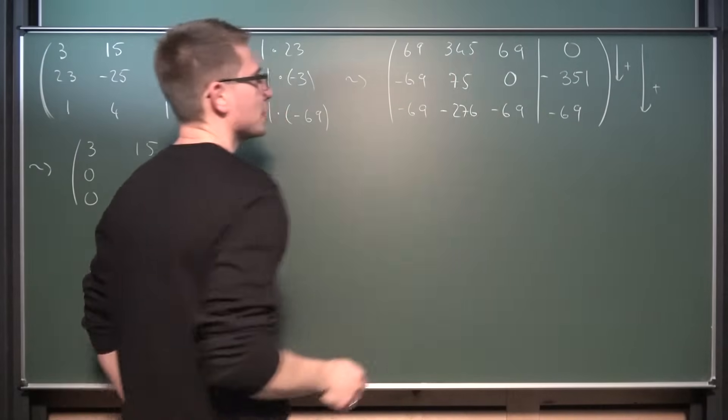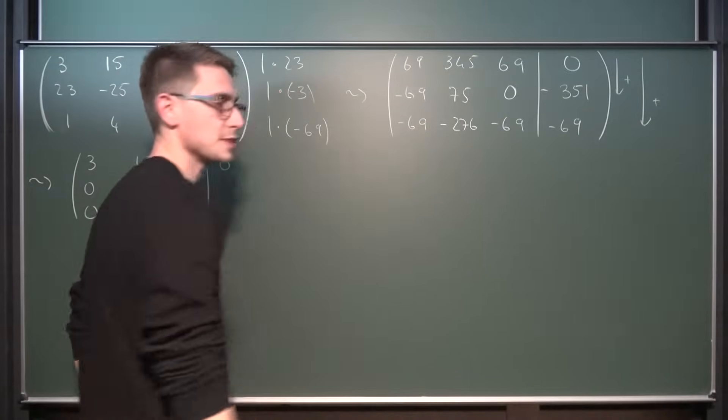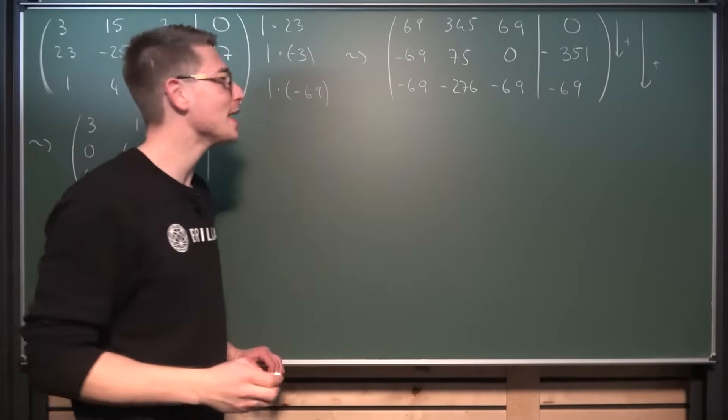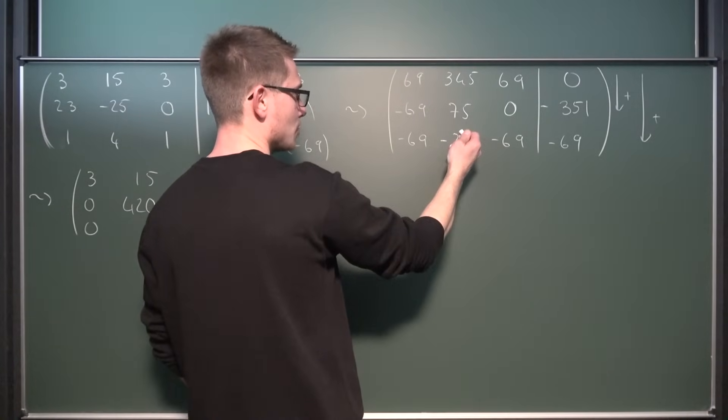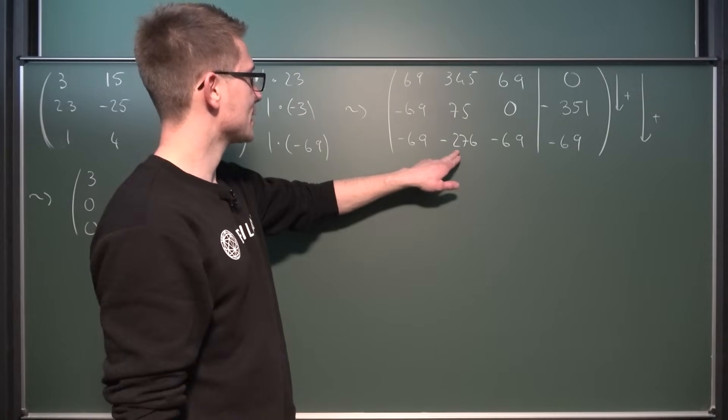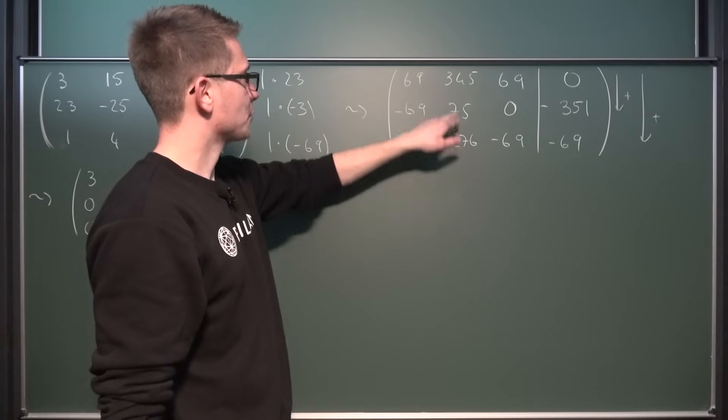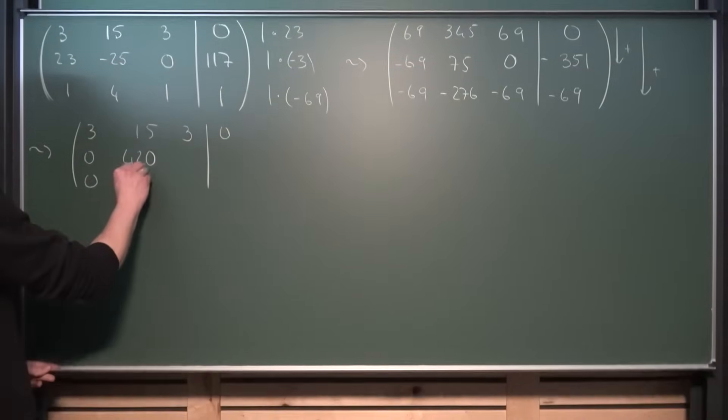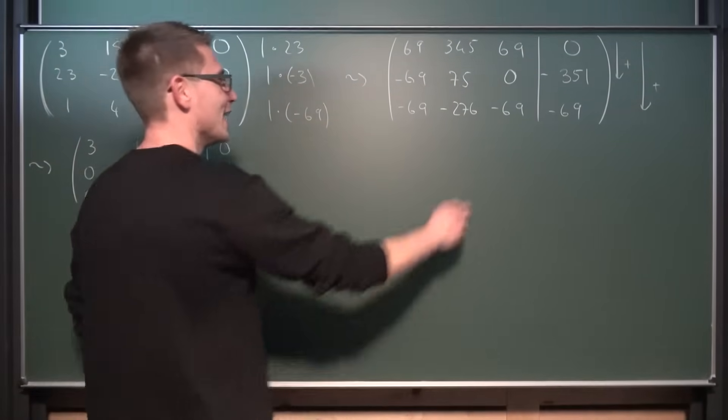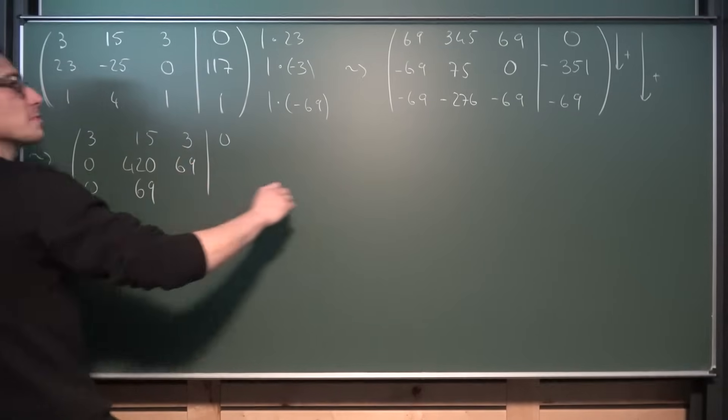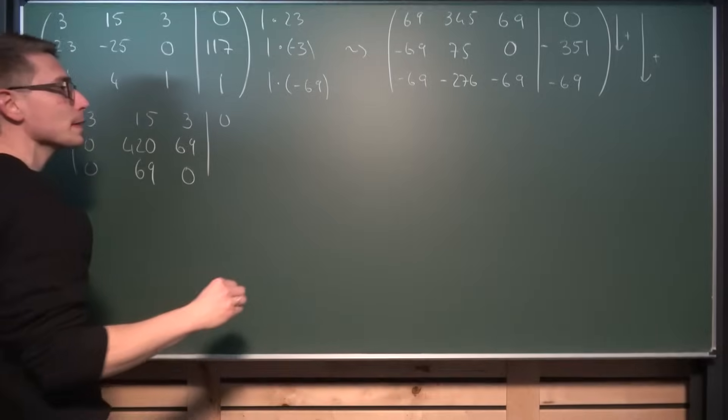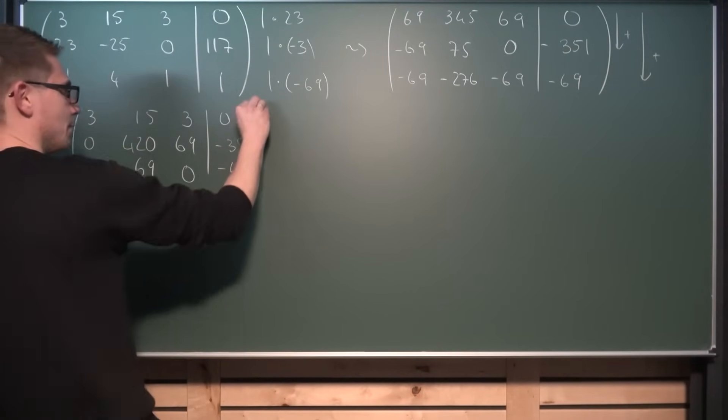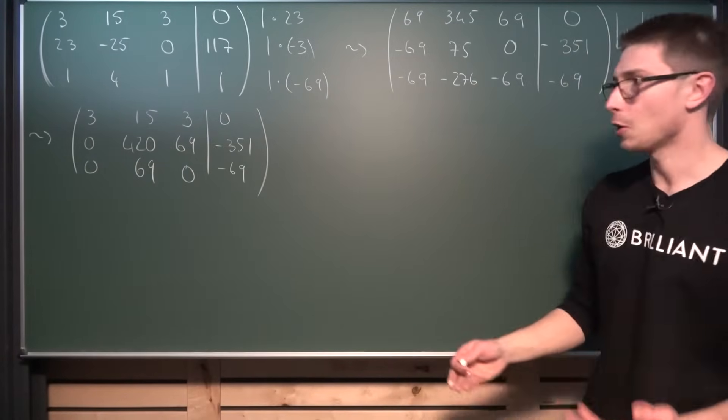So we get 0 and 0 here. Then we got 345 plus 75, which is 420. This is so damn nice. So we got 345 minus 276, which makes 69. This is so nice. Who came up with this matrix? This is amazing. And then we are going to get 69 here, which is also very nice. And then 69 minus 69 is 0 here. And then we are going to get negative 351 and negative 69. Thus far, thus good. We already came pretty far with that.